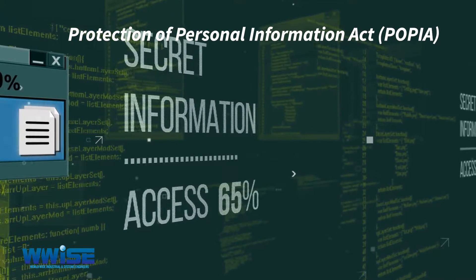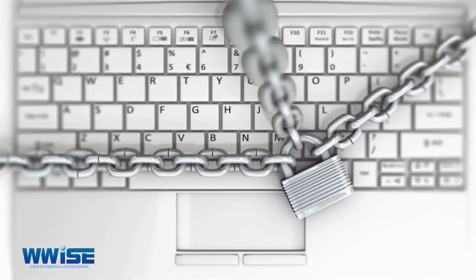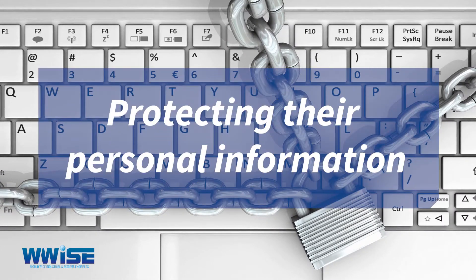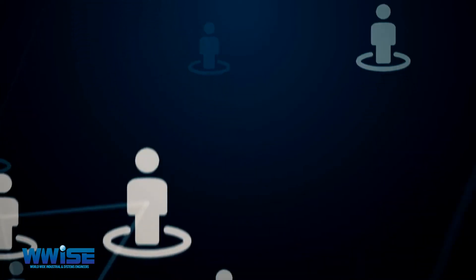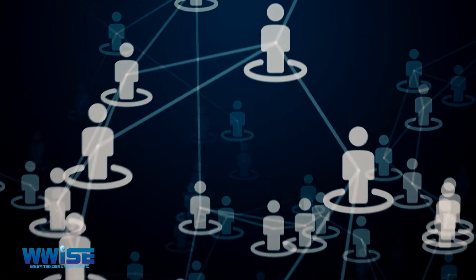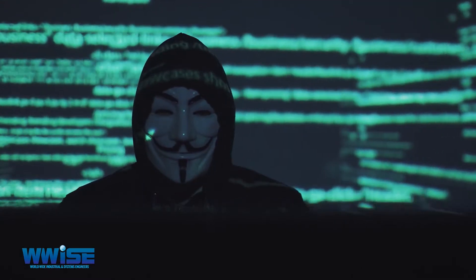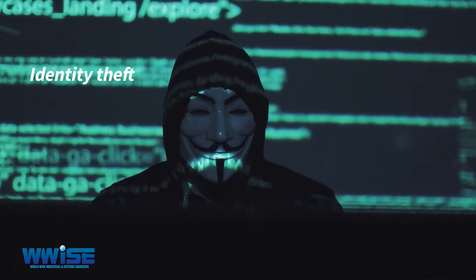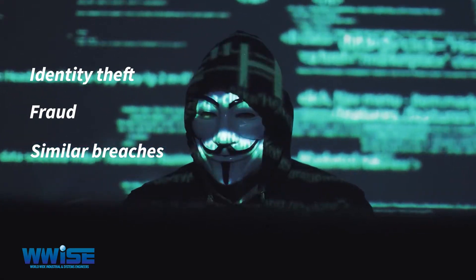The Protection of Personal Information Act sets out to protect people from harm by protecting their personal information. To achieve this, it provides conditions for when it is lawful for someone to process someone else's personal information. POPIA aims to protect individuals and organisations against identity theft, fraud, and similar breaches of their private information.